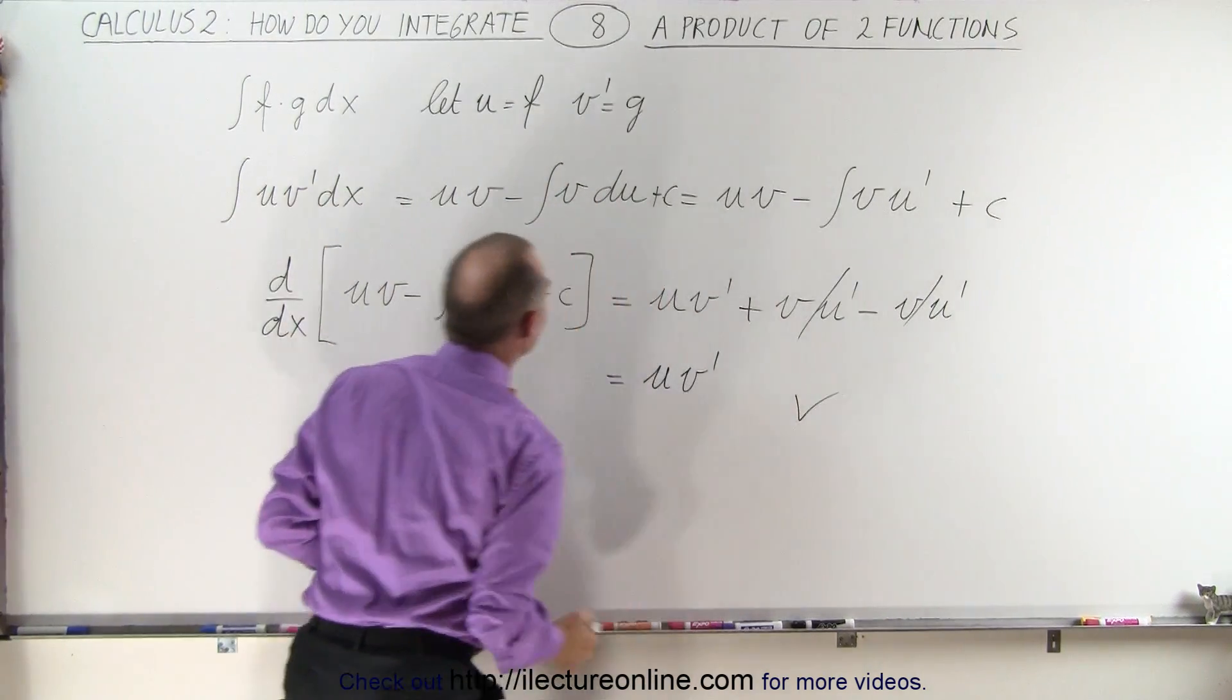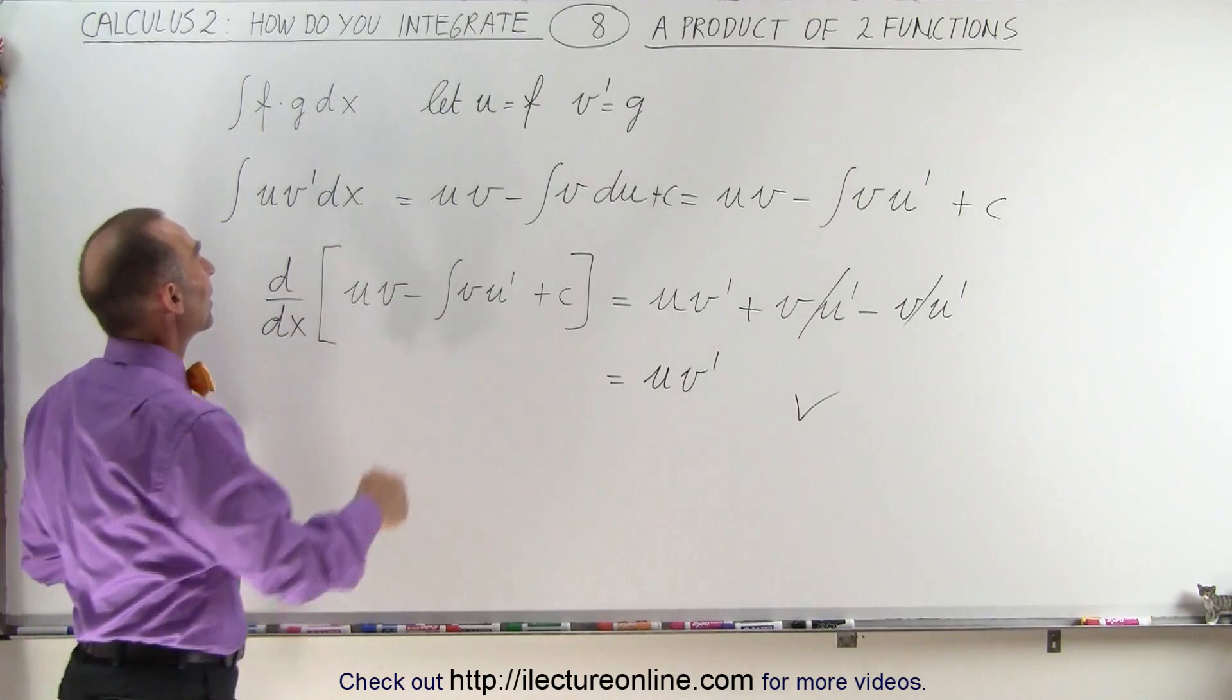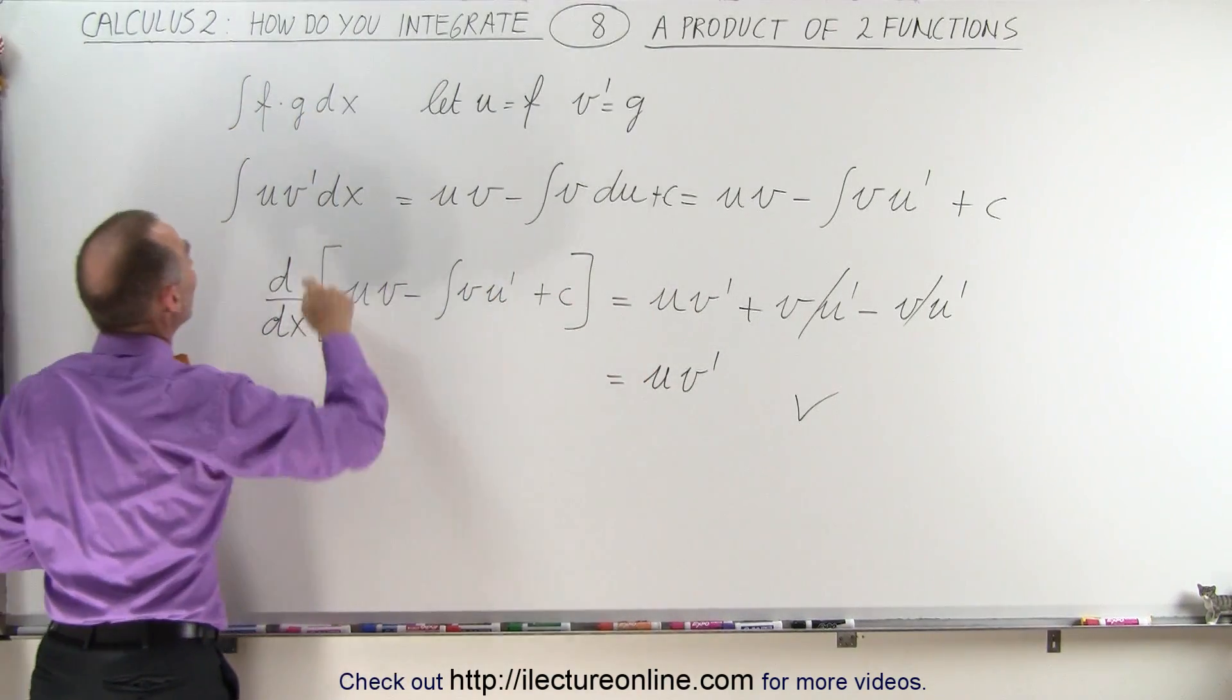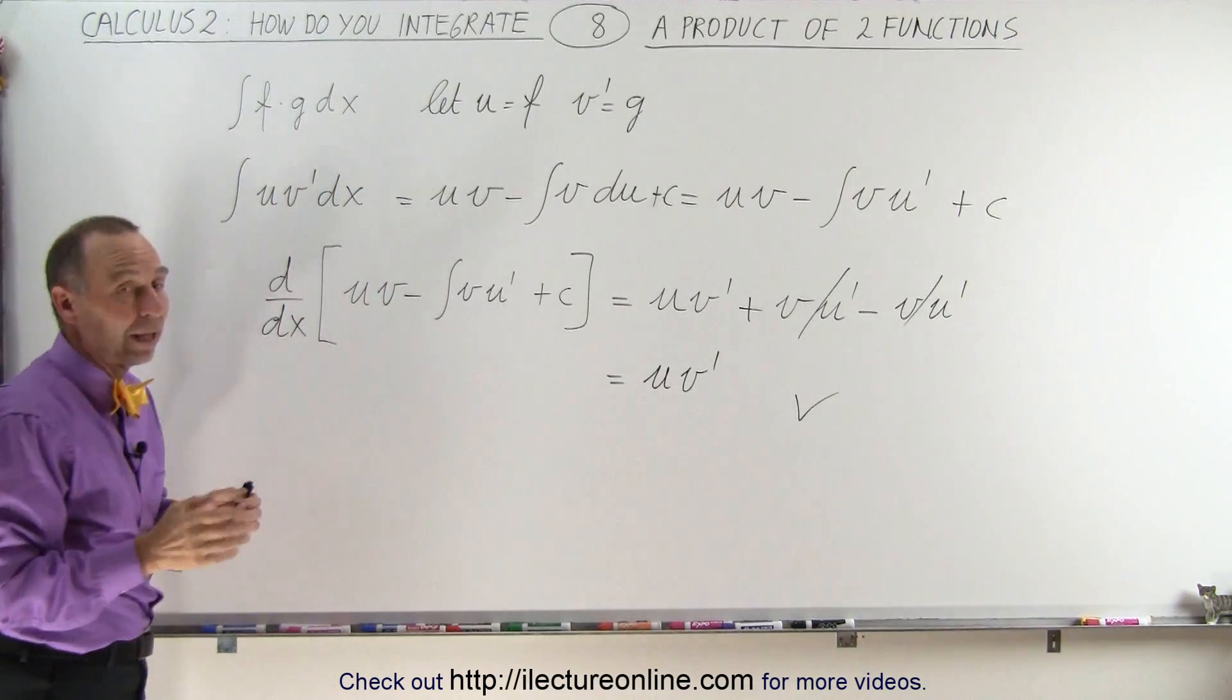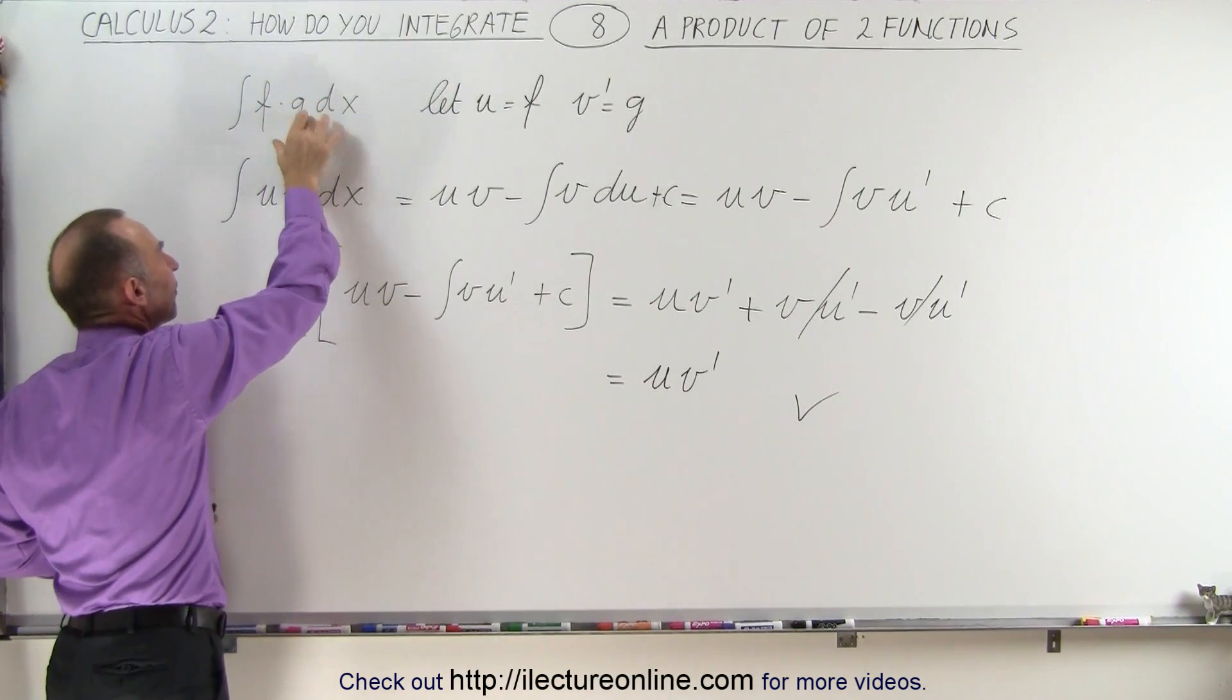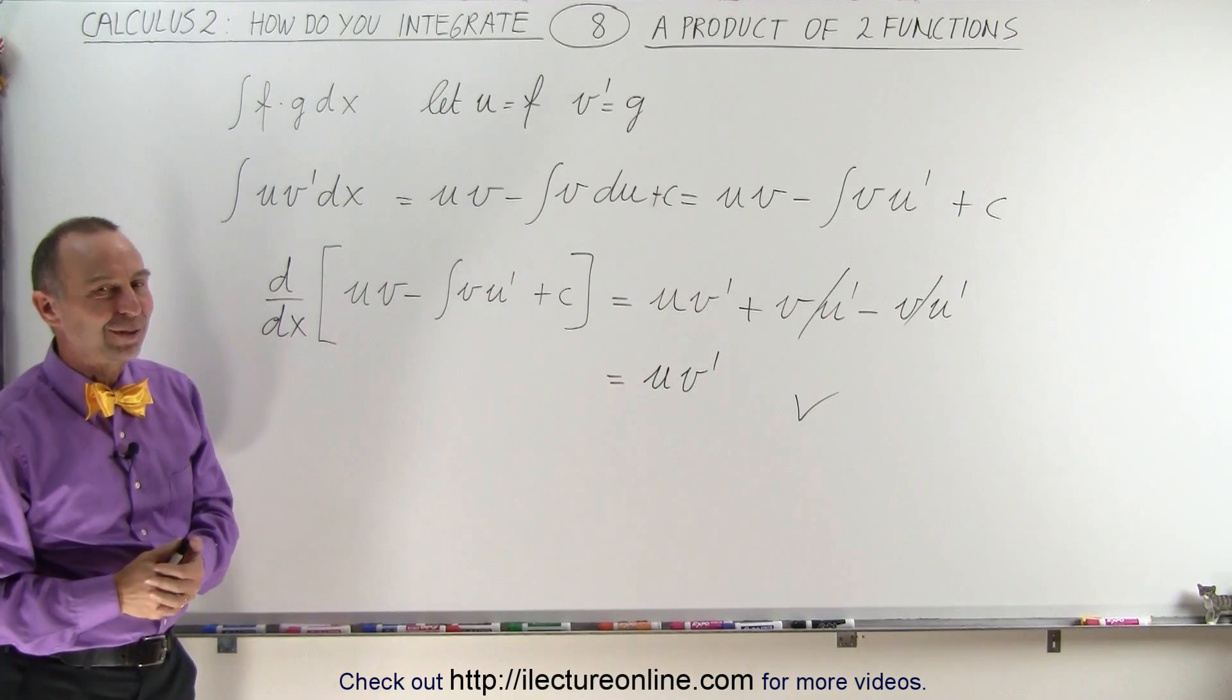So we've shown that yes indeed integration by parts is correct when we have an integral of u v prime times dx. When we integrate it we get u times v minus the integral of v du which means that if we have a product of two functions we have to somehow recognize that one of these can represent the derivative of another function call it v prime and then we can apply the integration by parts. And we have some examples of that in our video series.